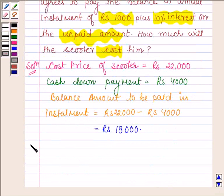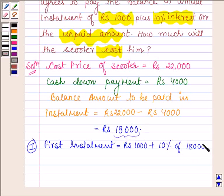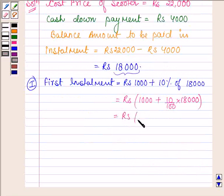Now let us find the annual installments. The first installment is equal to Rs 1,000 plus 10% of the unpaid amount, and the unpaid amount is Rs 18,000. So this is further equal to Rs 1,000 plus Rs 1,800, which gives the first installment.